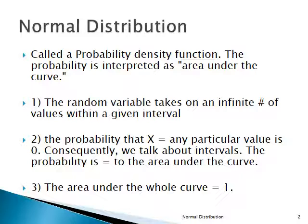The probability is interpreted as the area under the curve. All the area under the curve is equal to 1. So if we're looking for the probability in a particular interval of the random variable — between two values — we're looking at the area under the curve between those values divided by the total area, which is 1. That's the proportion, and a proportion is a percentage, is a probability.